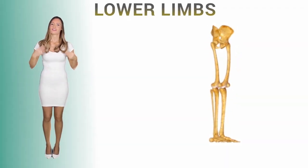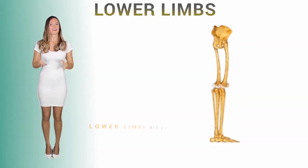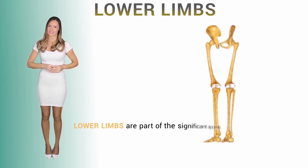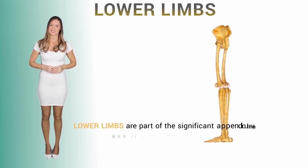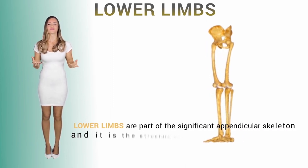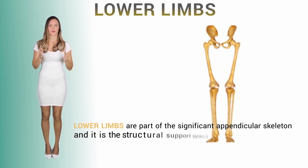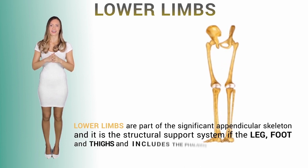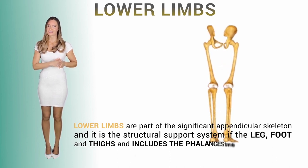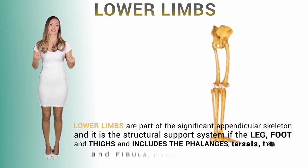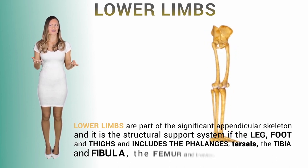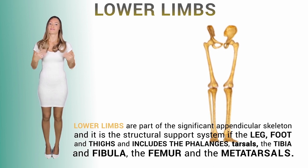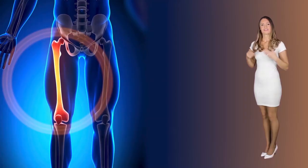The lower limbs. The lower limbs are a significant part of the appendicular skeleton, and it is a major structural support system. It includes the leg, the foot, thighs, and it includes phalanges, tarsals, the tibia, fibula, the femur, and the metatarsals.